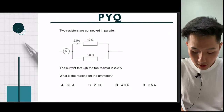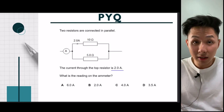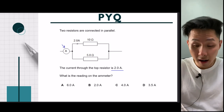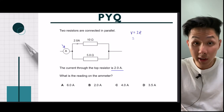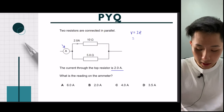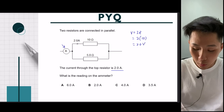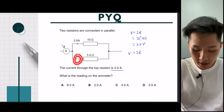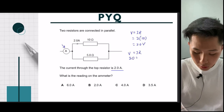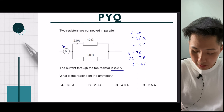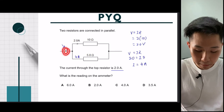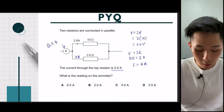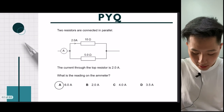Final question: two resistors are connected in parallel — 10 Ω and 5 Ω. The current through the top (10 Ω) resistor is 2 A, so V = 2 × 10 = 20 V. For the 5 Ω resistor: I = 20 / 5 = 4 A. The ammeter records the total current: 2 + 4 = 6 A.